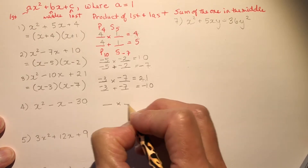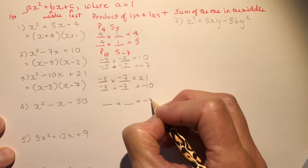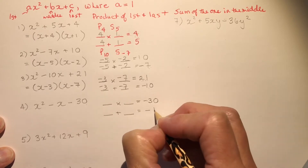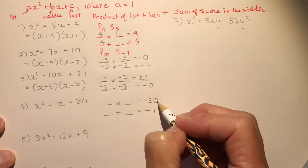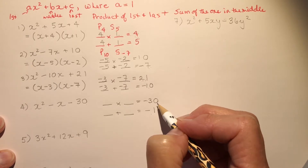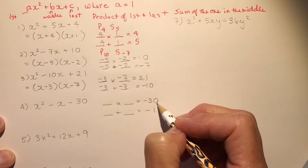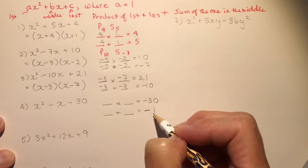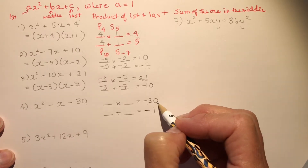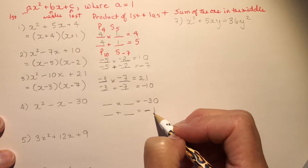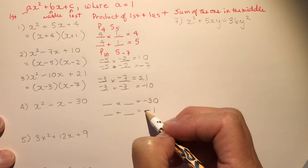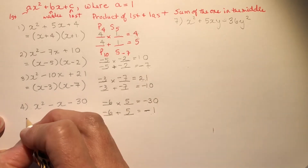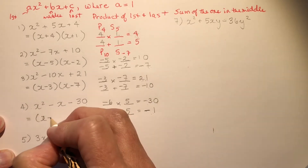The next one has a product of 1 times minus 30, so I need two numbers that multiply to negative 30 and add to minus 1. Since the product is negative, one number must be positive and one negative. They add to a negative number, so the larger of the two must be negative. 5 and 6 make 30 and differ by 1 — so I need negative 6 and positive 5: negative 6 plus 5 is negative 1. Result: (x − 6)(x + 5).